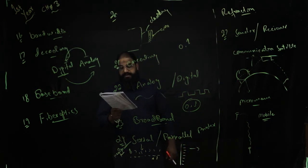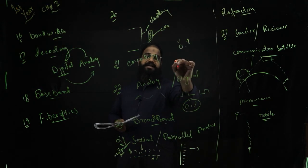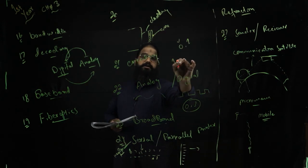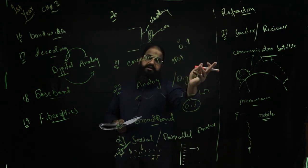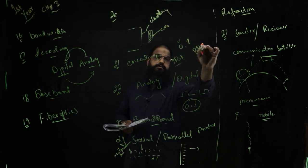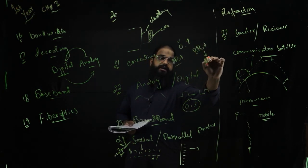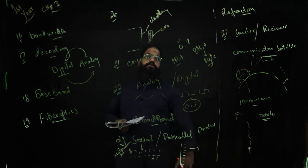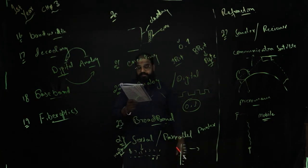Bit and byte: A bit is a single unit — it is either zero or one. When eight bits come together, they form one byte. So a byte is made up of eight bits.